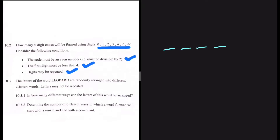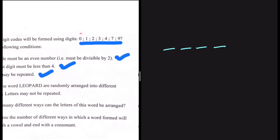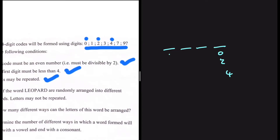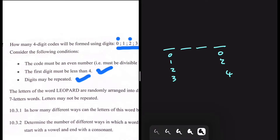If the number on the last position is even, then the code itself is even. So how many even numbers do we have here? We have zero, two, and four — so only zero, two, and four can occupy that last spot. The first digit must be less than four, so only zero, one, two, three can occupy that first spot.